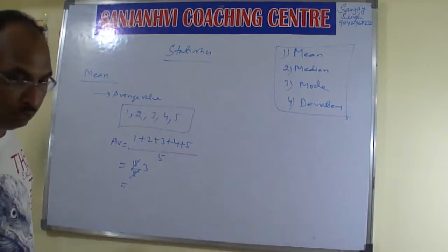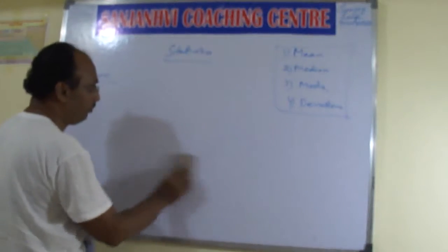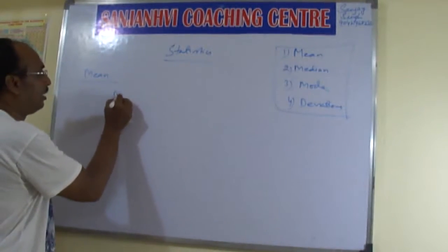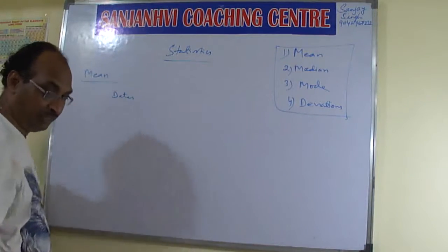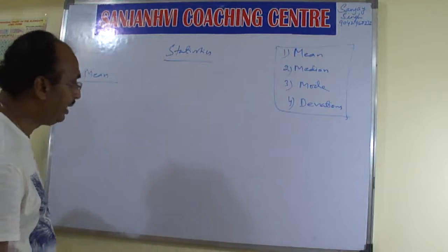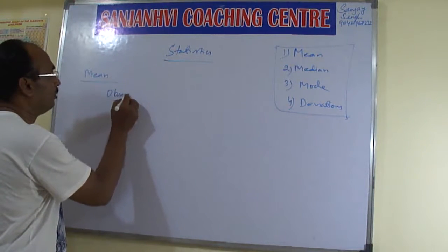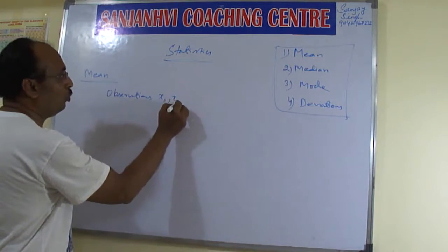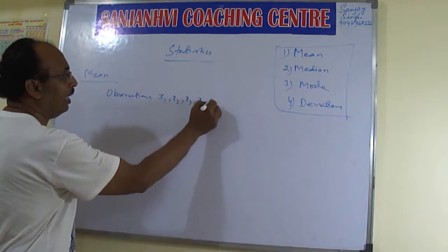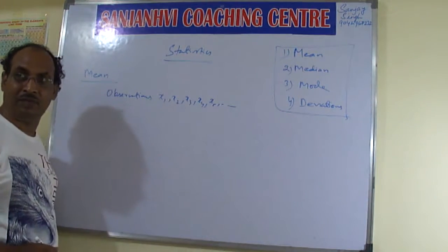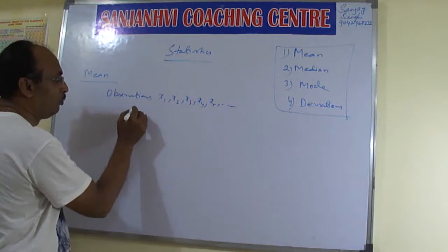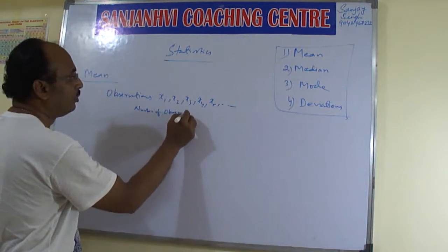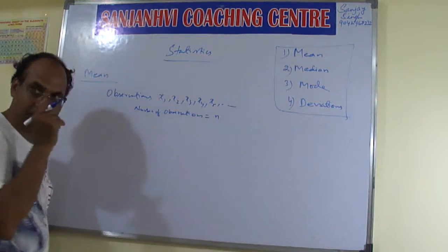We need to find average value, and the data are observations. Instead of data what we will say here — the observations — so x1, x2, x3, x4, x5 like this. And number of observations, suppose you can say n. Number of observations is equal to n.